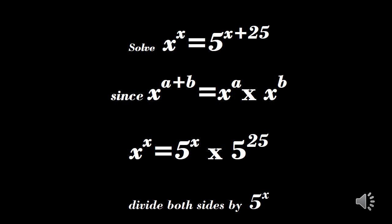We use the law of indices: x raised to power a plus b is the same as x raised to power a times x raised to power b. So for 5 raised to power x plus 25, we have x raised to power x equals 5 raised to power x times 5 raised to power 25.